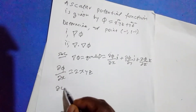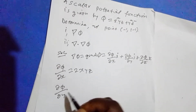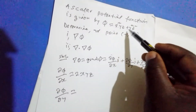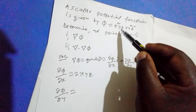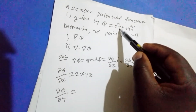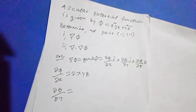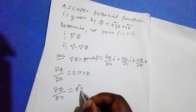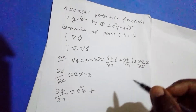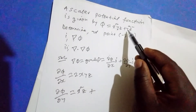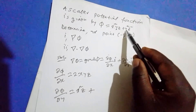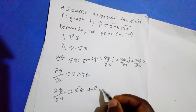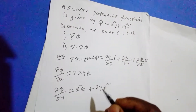Del phi del y: we differentiate with respect to y. Differentiating y from the first term gives 1, times z times x squared, so we get x squared z. Plus, differentiating y squared from the second term gives 2y times z squared, so we get 2yz squared. Therefore del phi del y equals x squared z plus 2yz squared.